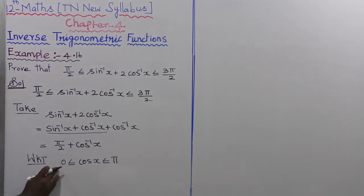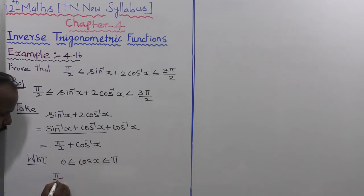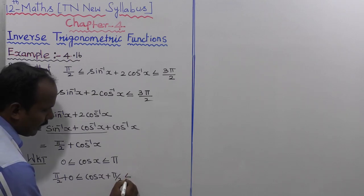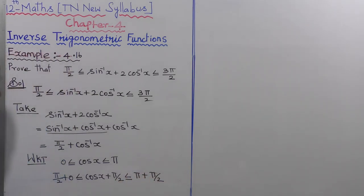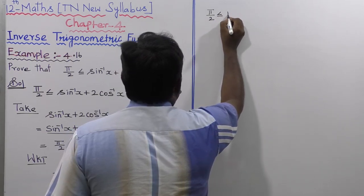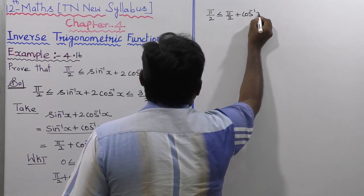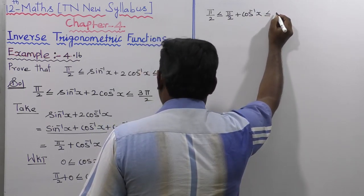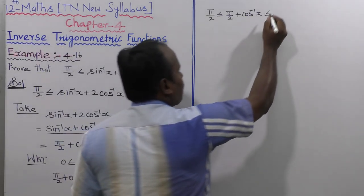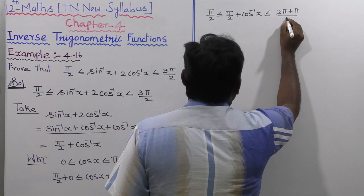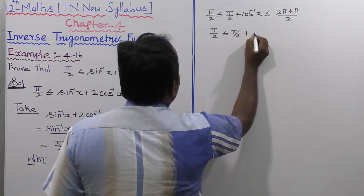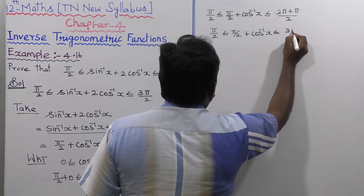Now adding π/2 to all sides of 0 ≤ cos⁻¹(x) ≤ π, we get π/2 + 0 ≤ π/2 + cos⁻¹(x) ≤ π + π/2. The left side gives π/2, and the right side gives (2π + π)/2 = 3π/2. Therefore: π/2 ≤ π/2 + cos⁻¹(x) ≤ 3π/2.